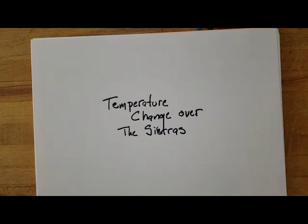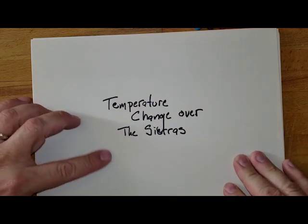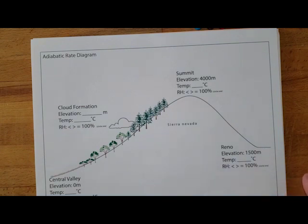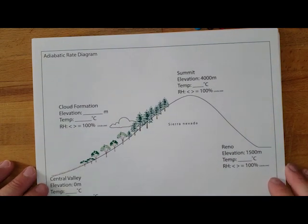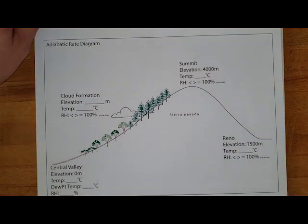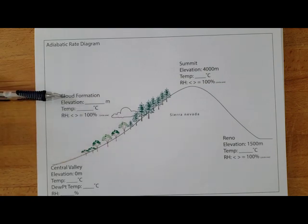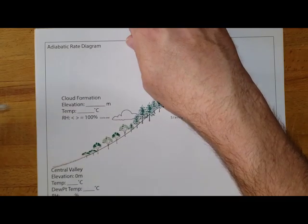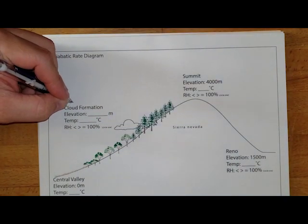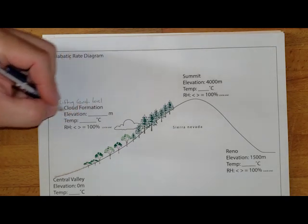I'd like to look at an example of the temperature change as it goes up and over the Sierra Nevadas. This little diagram I have available for you on our class website basically goes through measuring how our temperature changes from the Central Valley going up to this level of cloud formation. We know this level of cloud formation as the lifting condensation level or the LCL.